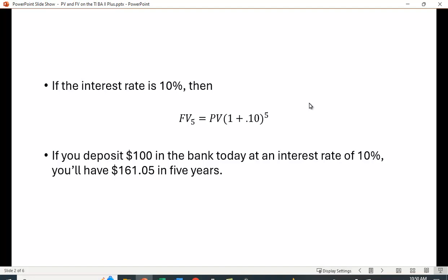So let's say the interest rate is 10%. Then the future value is going to be 1 plus 0.10 raised to the fifth power. And if you do that on a calculator, you're going to get $161.05 in five years.